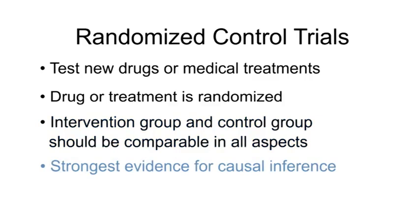Randomization provides the strongest evidence for causal inference. Randomization basically allows us to say, if everything else is the same, what is the effect of just the exposure on the outcome? For example, if assignment of a treatment was not random, then researchers might select which patients got which treatment based on patient characteristics such as severity of illness, which could bias the study results.